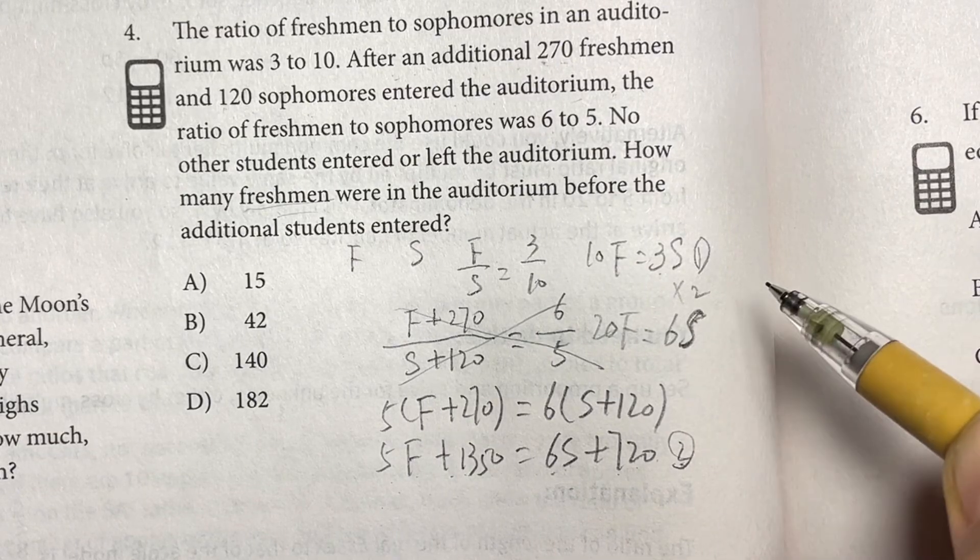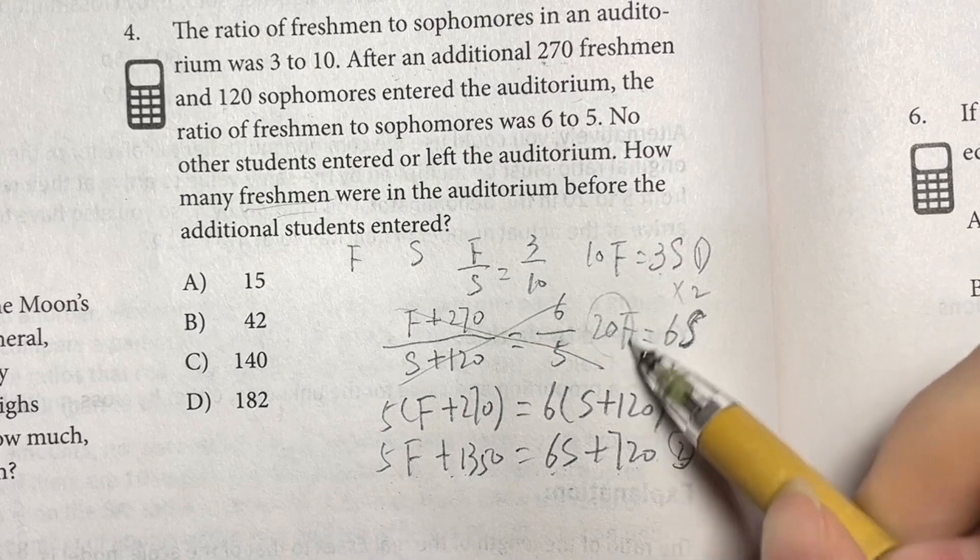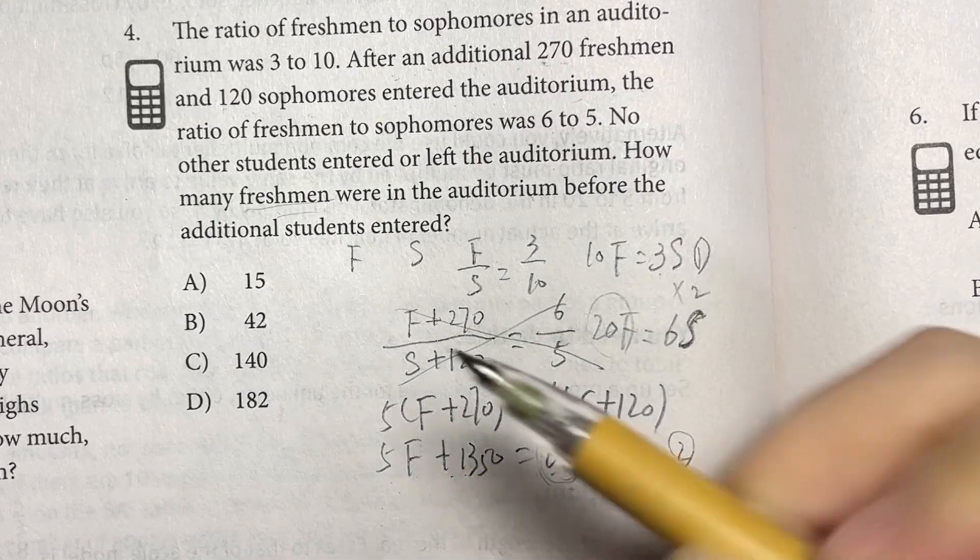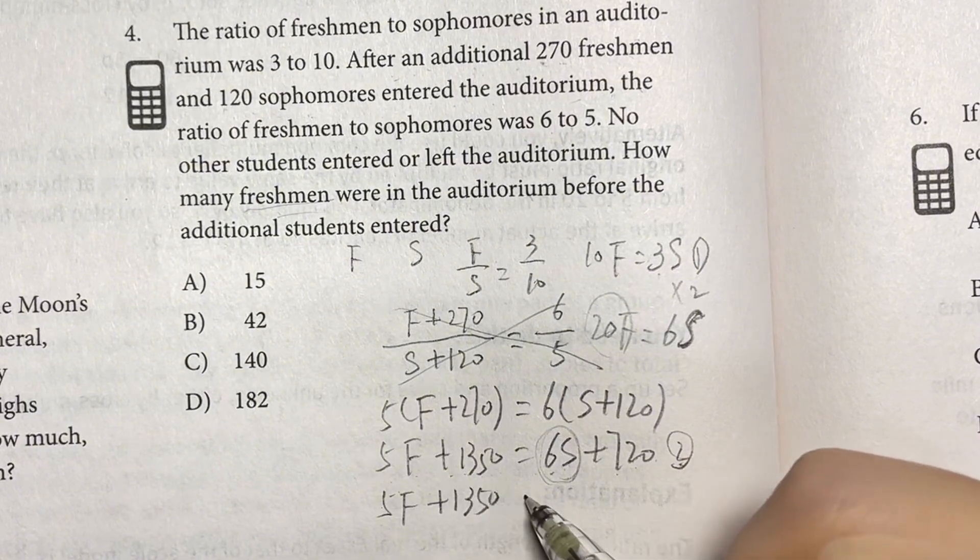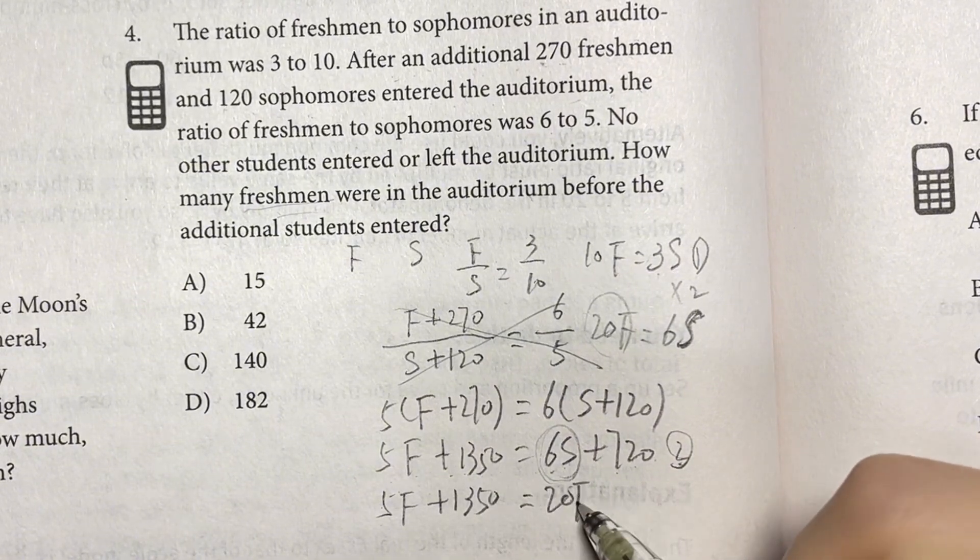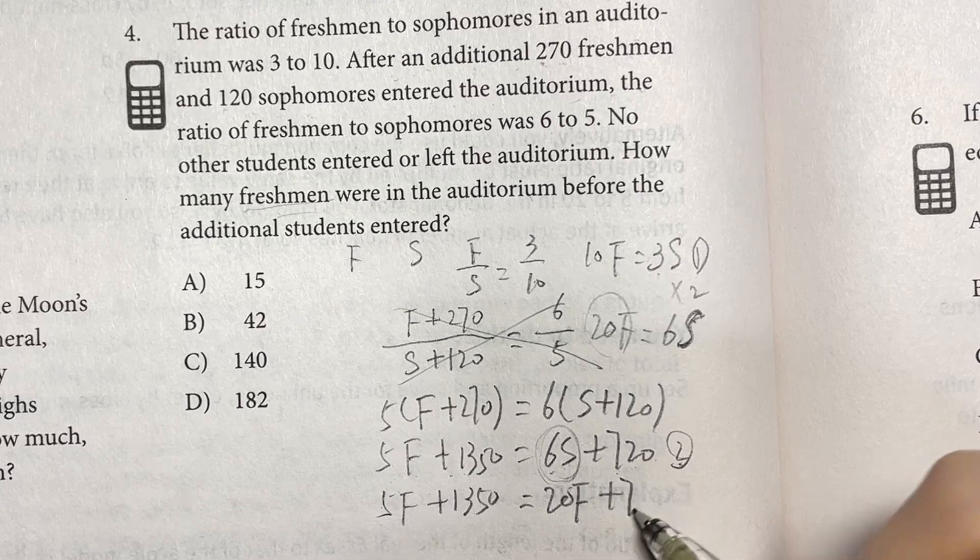Then we plug 20F to this here. So this 5F plus 1350 equals 20F plus 720.